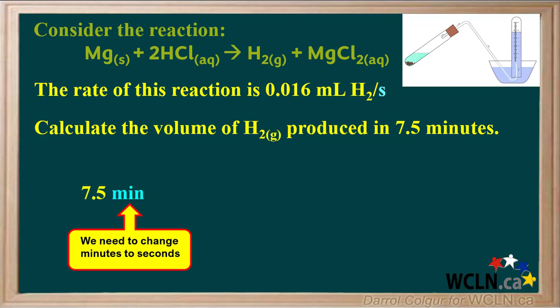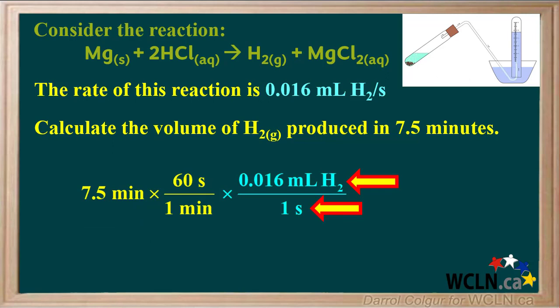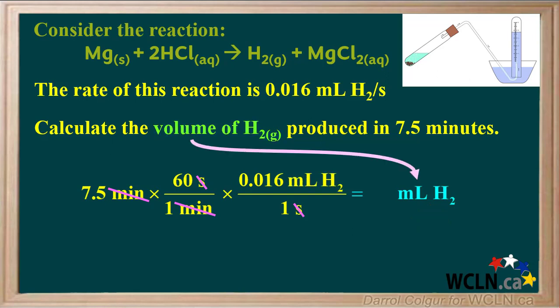In order to use this rate, we need to change minutes to seconds. We'll do this by multiplying by the conversion factor 60 seconds per one minute. The minutes will cancel and we'll be left with seconds on the top. Now we can multiply by the rate as the conversion factor: 0.016 milliliters of hydrogen per one second. Looking at the units, we see that seconds cancel, leaving us with the unit milliliters of hydrogen. We're asked to calculate the volume of H2 gas, and milliliters of hydrogen is a good unit for this answer, so we don't need to do any more conversions.